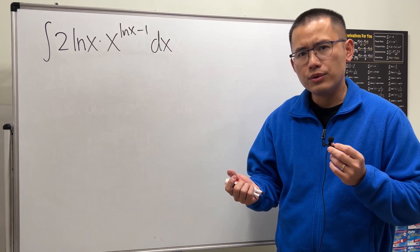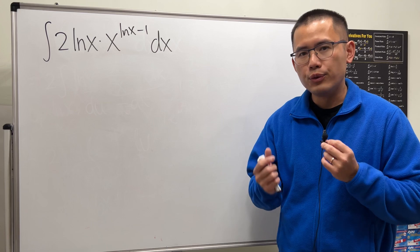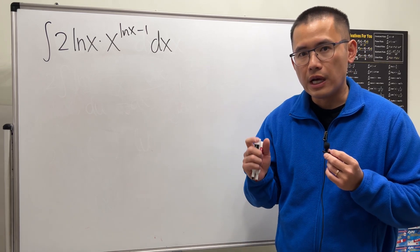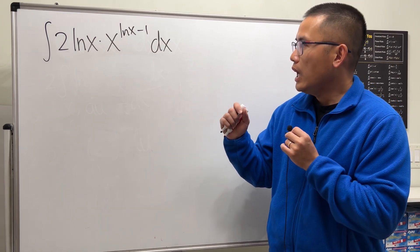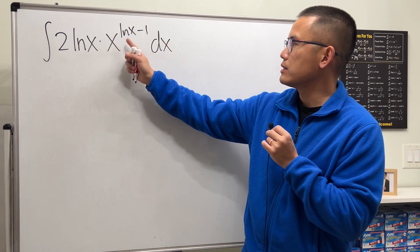it's a good choice to use u substitution that u equal to lnx. But the derivative of lnx is 1 over x, so we should see that in the integral and we do have that because we have x to the minus one power.